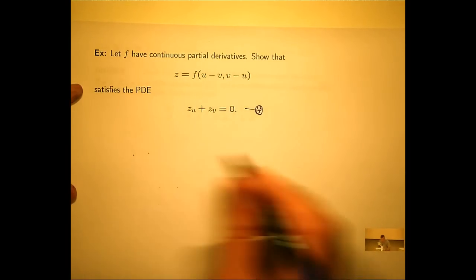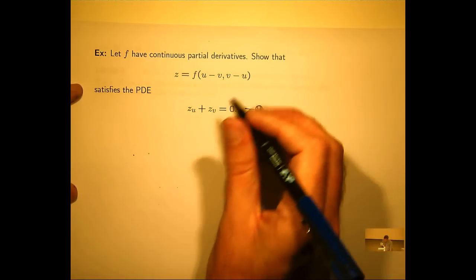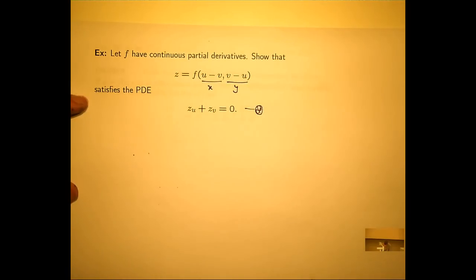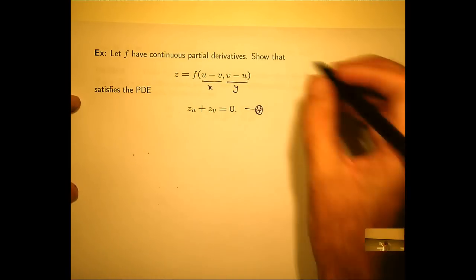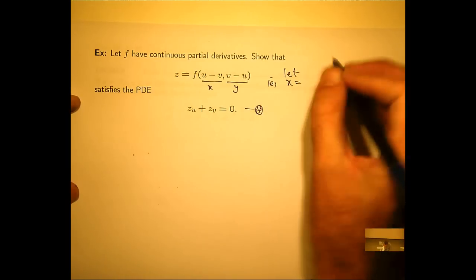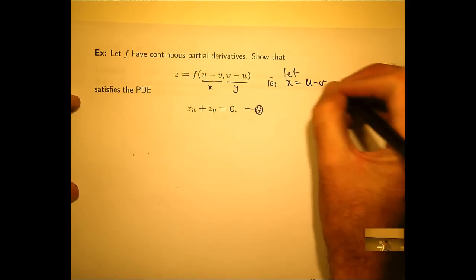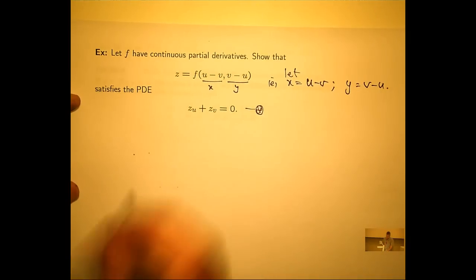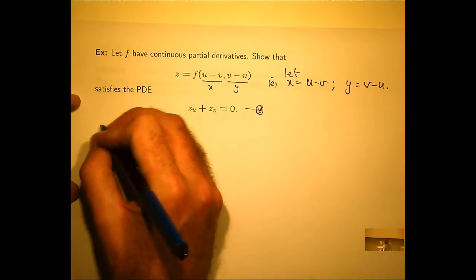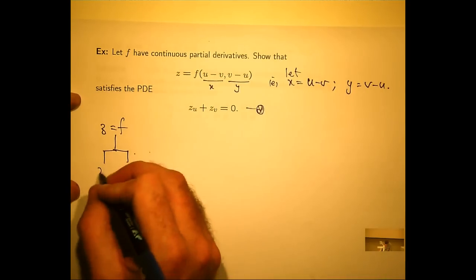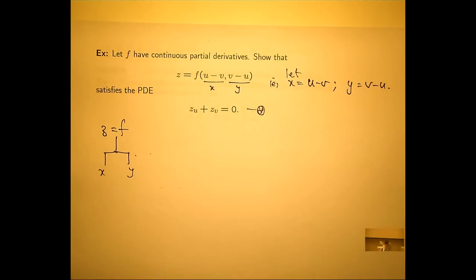Let's look at our dependence. I'll let that be x and let that be y. So x equals u minus v, and y equals v minus u. Under these labels, it's a function of two variables.